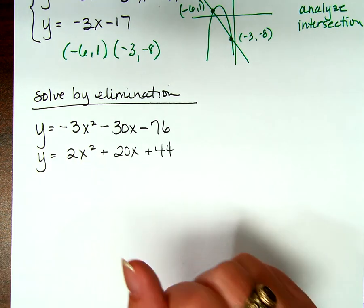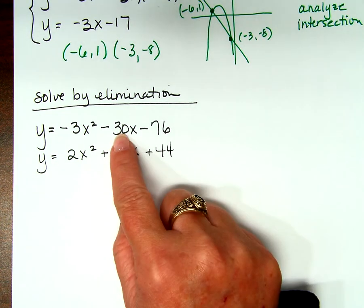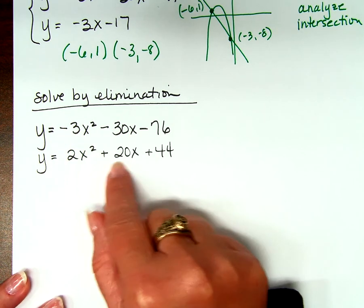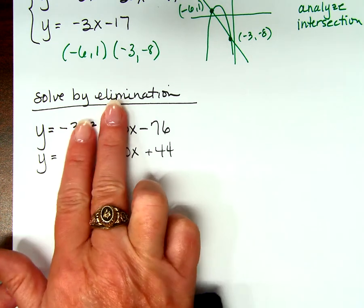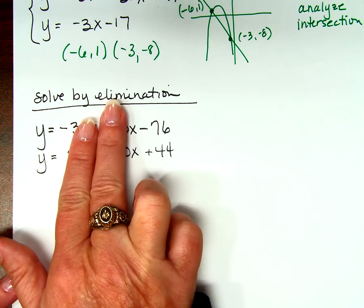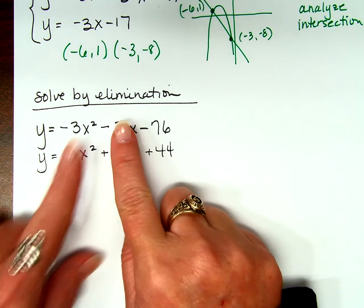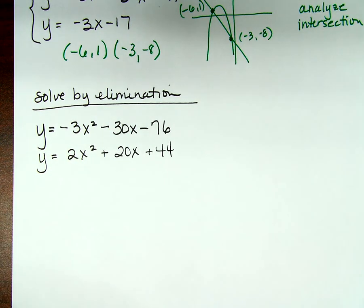Can I multiply this one by 2 and this one by 3 and add them together to eliminate the x's? If I multiply this by 2 that's negative 60, and if I multiply this by 3 that's positive 60, so that would actually eliminate — but I chose a poor example. My point is: if you can't eliminate both the x and the x-squared at the same time, you have not truly eliminated all of the x variable.